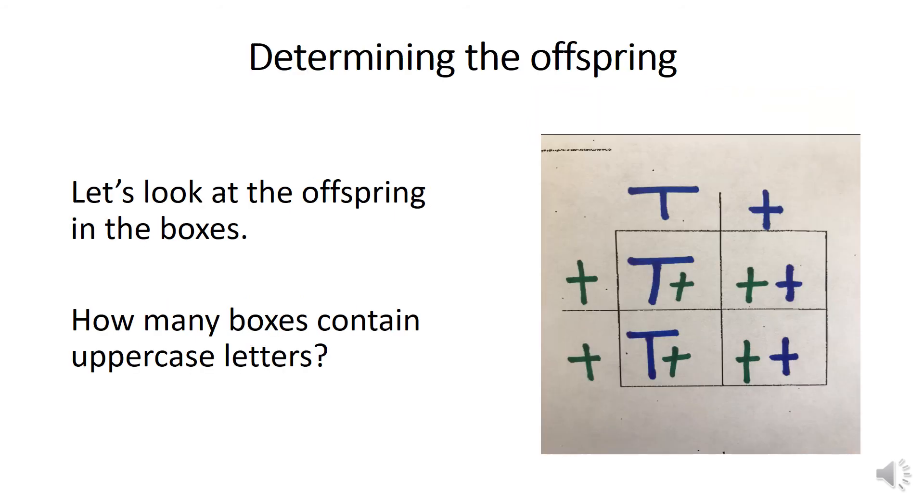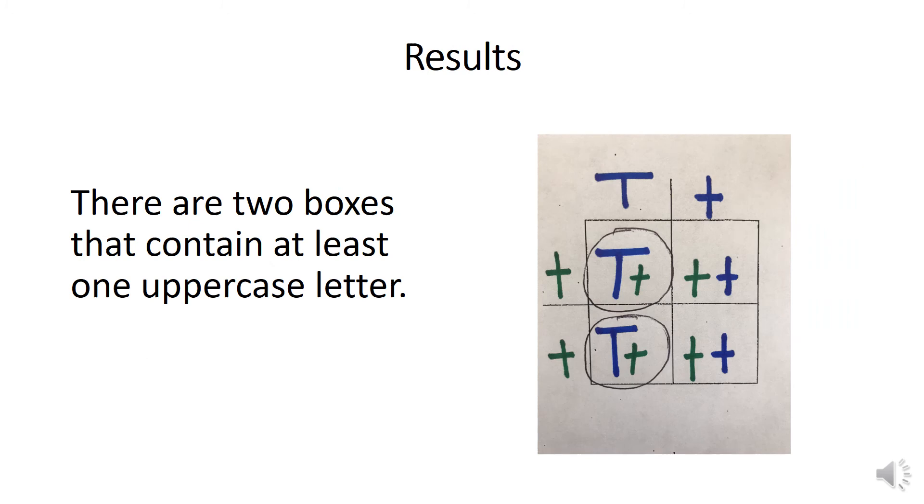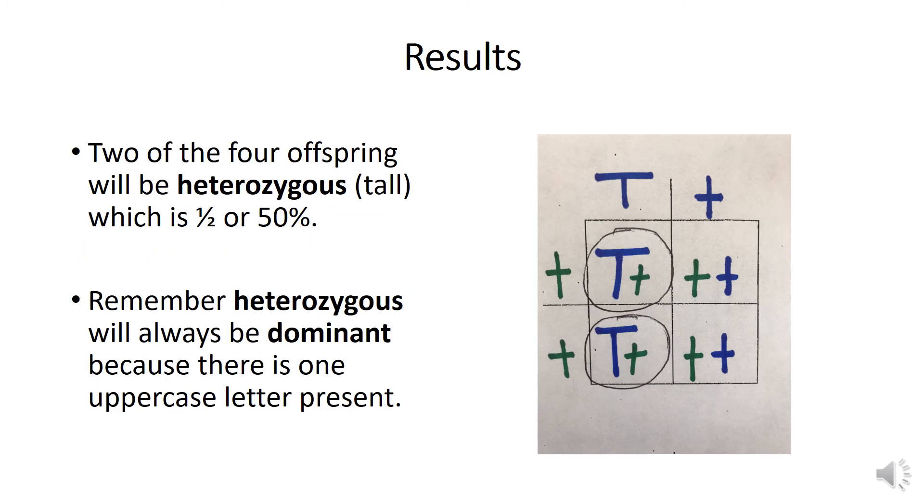Now it's time to look at the offspring in the boxes. How many boxes contain uppercase letters? There are two boxes that contain at least one uppercase letter. Two out of four offspring will be heterozygous and tall. So one half or 50 percent. Remember, heterozygous will always be dominant because there's one uppercase letter present.